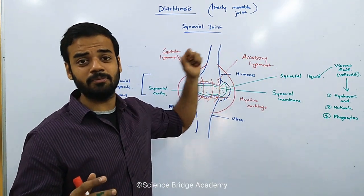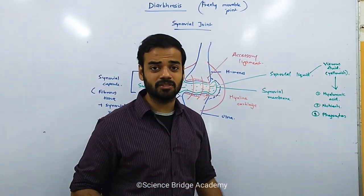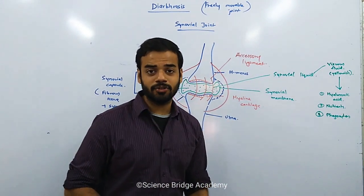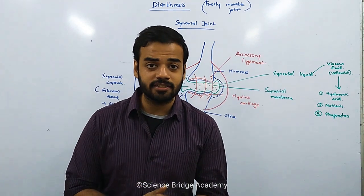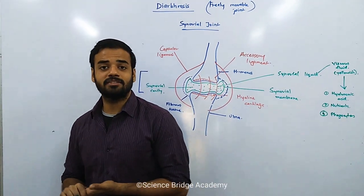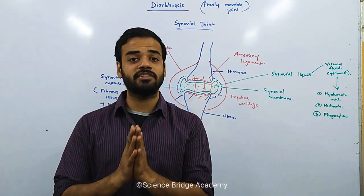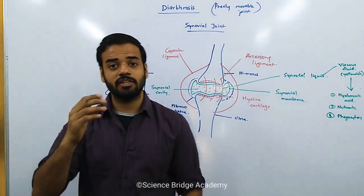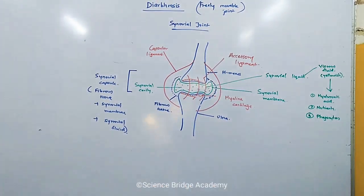That completes today's lecture on the structure of the synovial joint. The next part will cover the types of synovial joints — ball and socket, hinge joint, and others. Please revise the earlier joints before the next lecture. An upcoming lecture will also cover a revision of all 206 bones of the body. Thank you.